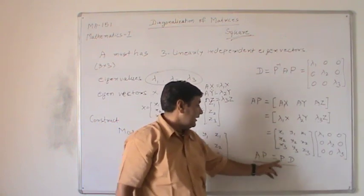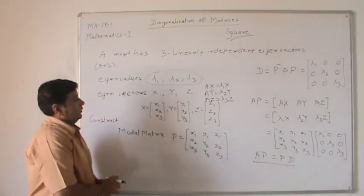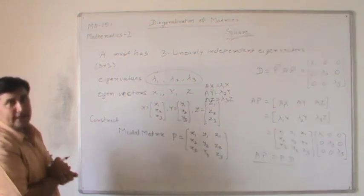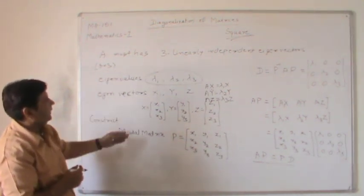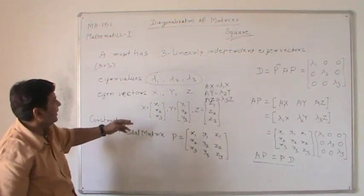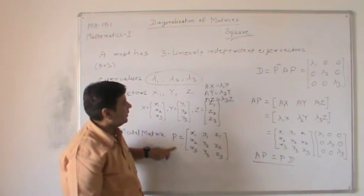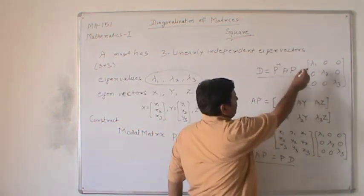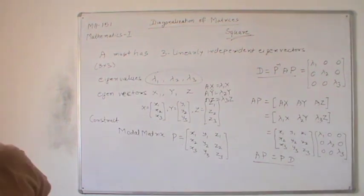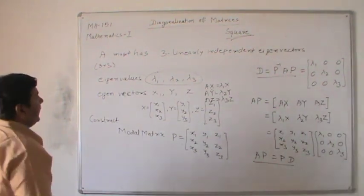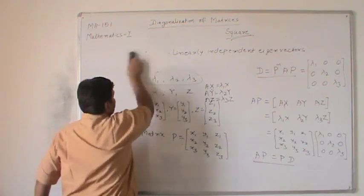This is the working rule for performing diagonalization of a given matrix: first calculate the eigenvalues, then calculate the eigenvectors, then calculate the modal matrix, and after the calculation of the modal matrix, use the formula D = P⁻¹AP to get the diagonalized form. Now I take a 2×2 example and perform this working rule to demonstrate the diagonalization.